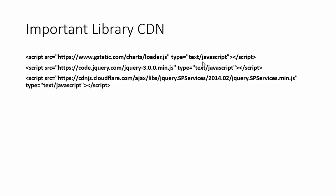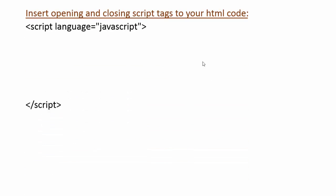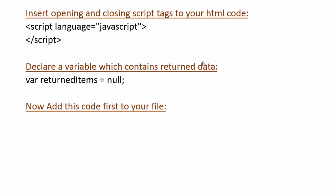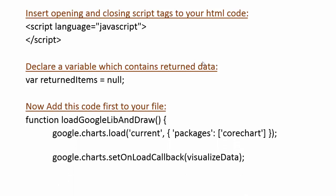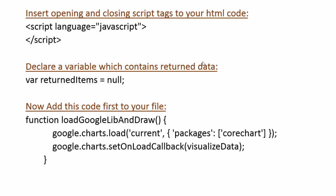After loading the libraries, I use opening and closing script tags in my HTML code. Between these script tags I write the code. First, I declare a returnItems variable — this will contain all the returned item values. After that I add a function called loadGoogleLibraryAndDraw, which is the method I am going to use for binding the Google Pie Chart to my page.